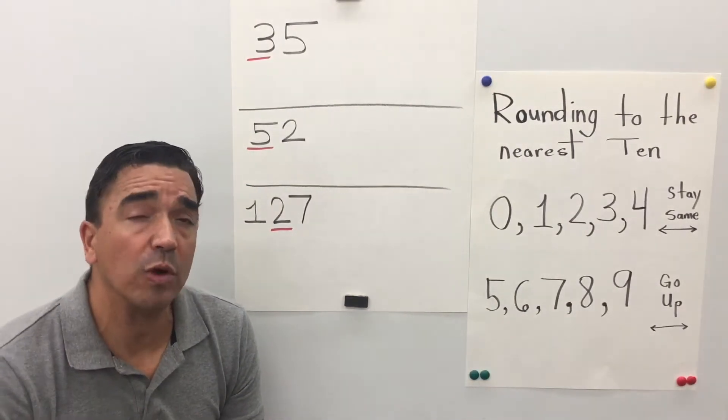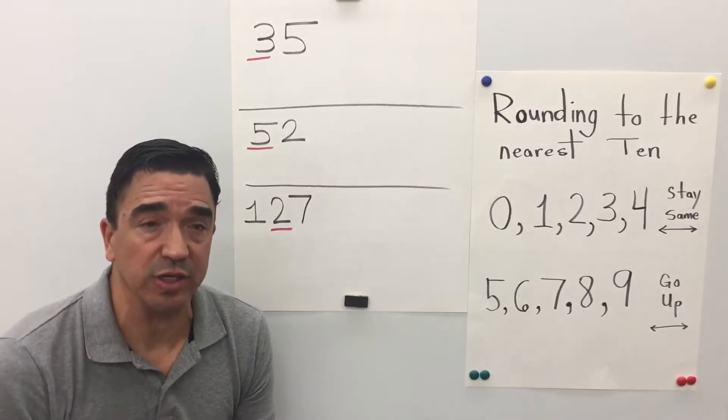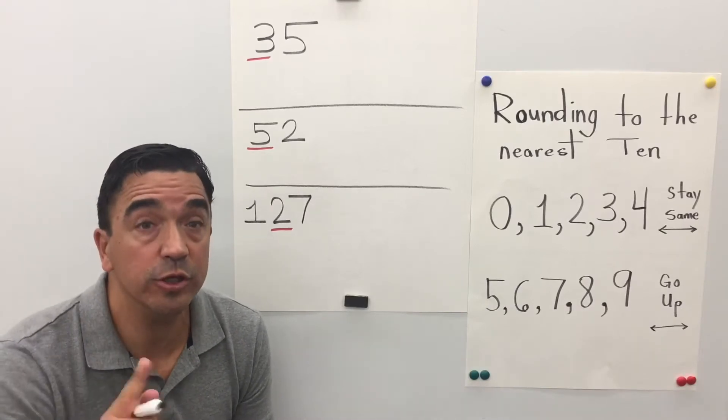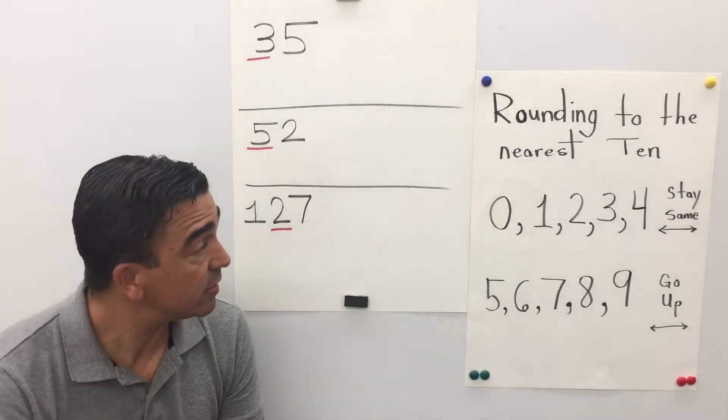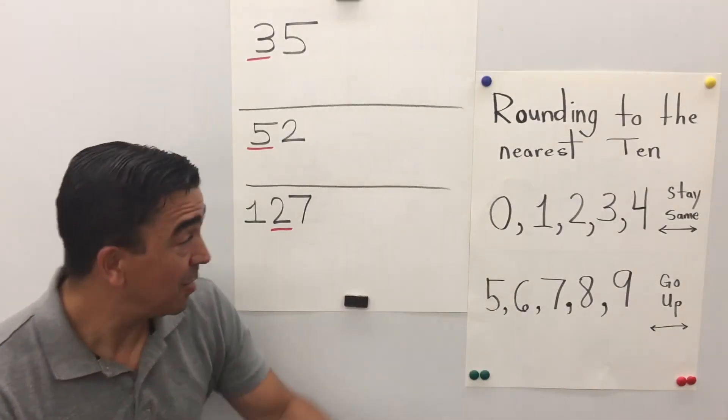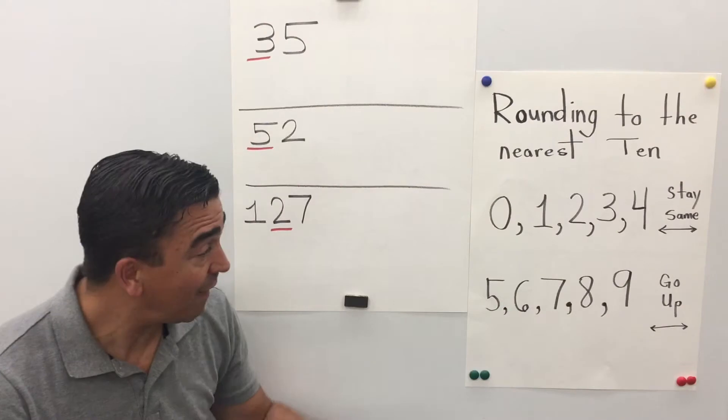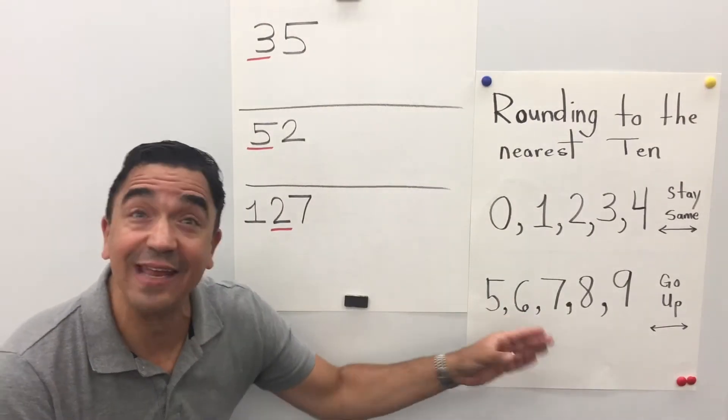Before we get started, I want to remind you a digit is any symbol used to write whole numbers. A digit like 0, 1, 2, 3, 4, 5, 6, 7, 8, 9.